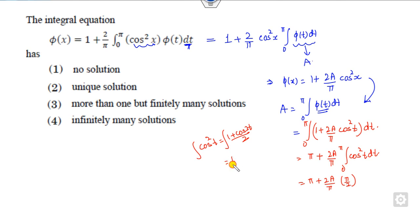If you integrate them, 1 by 2 is outside, it will be t plus sin 2t over 2, from 0 to pi. First value is pi, sin 2pi is 0, so it is pi by 2.